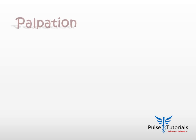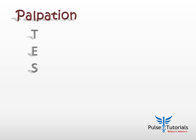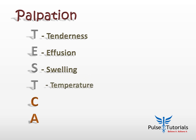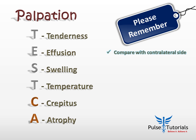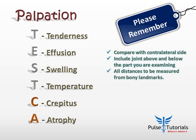Step two is palpation. Remember to assess tenderness, any effusion, swellings, temperature, crepitus, and atrophy of the muscle — measuring the atrophy. Always compare with the contralateral side and include the joint above and the joint below. All distances of tenderness, effusions, and swellings should be measured from a bony landmark. Never forget to do the fluctuation test and the transillumination test for swellings.